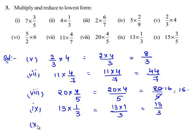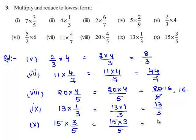Now let us move on to the tenth bit: 15 times 3 by 5. Let us multiply the numerators and denominators respectively. 15 times 3 divided by 5 gives 45 by 5. Since 45 and 5 have a common factor of 5, and 5 goes into 45 nine times, the product of 15 times 3 by 5 is 9.